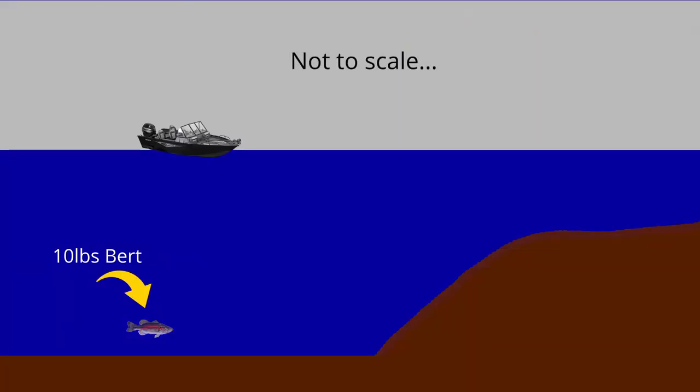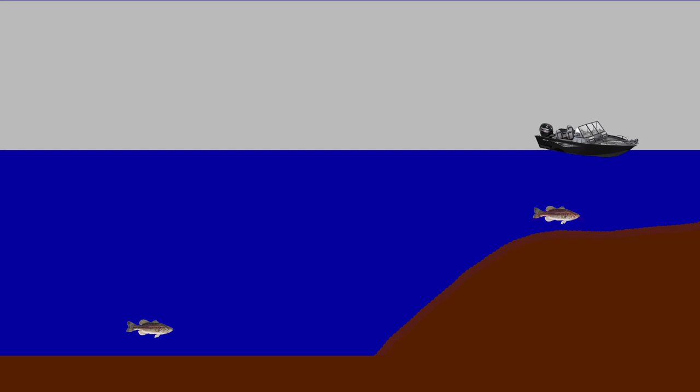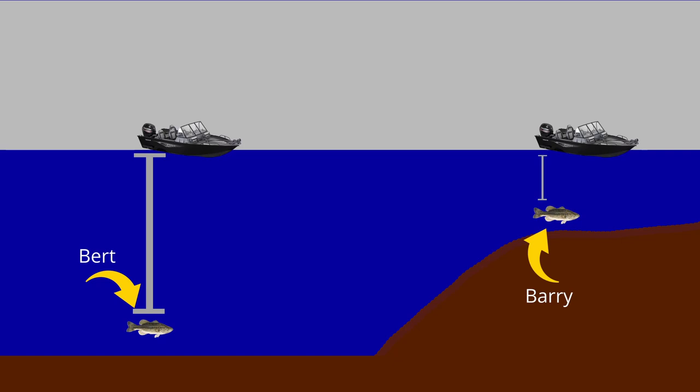Now if you were to drive out to deeper water and spot Barry's twin and equally chonky brother Bert, suspended at 50 feet of water, he might look something like this. Hypothetically the same fish, yet a significantly smaller return on our screen. This is because the pings bouncing back from Bert have a much longer distance to travel back to the transducer than the pings from Barry, meaning the return signal from Bert is weaker, thus drawing a smaller arch on your screen.